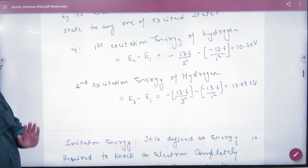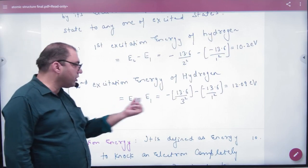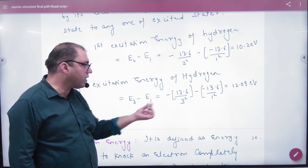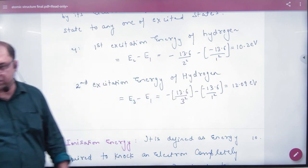What will happen in the second excitation state? Shell number 3 from 1. Energy in 3 is minus 13.6 by 3 squared, and energy in 1 is minus 13.6 by 1 squared.